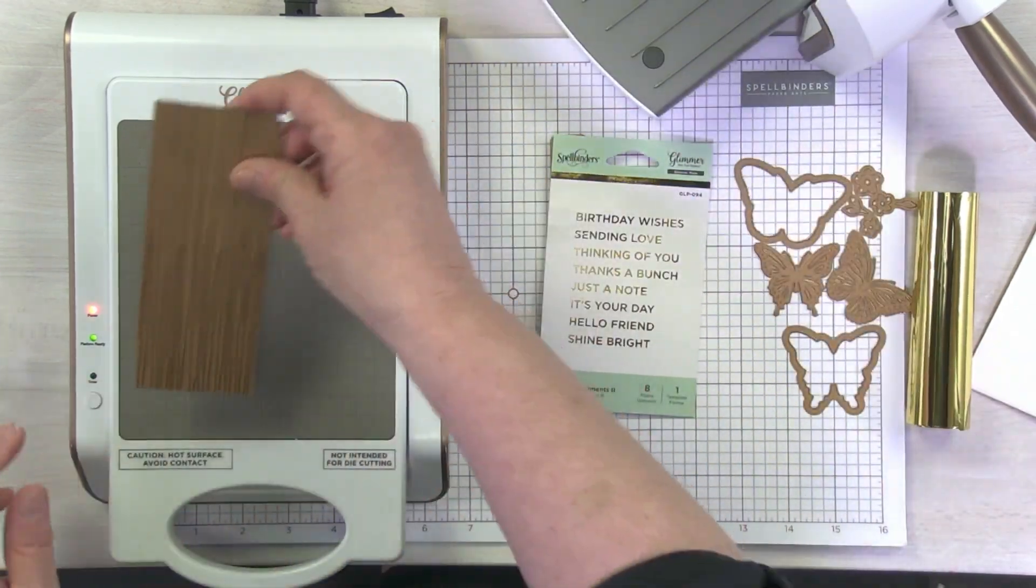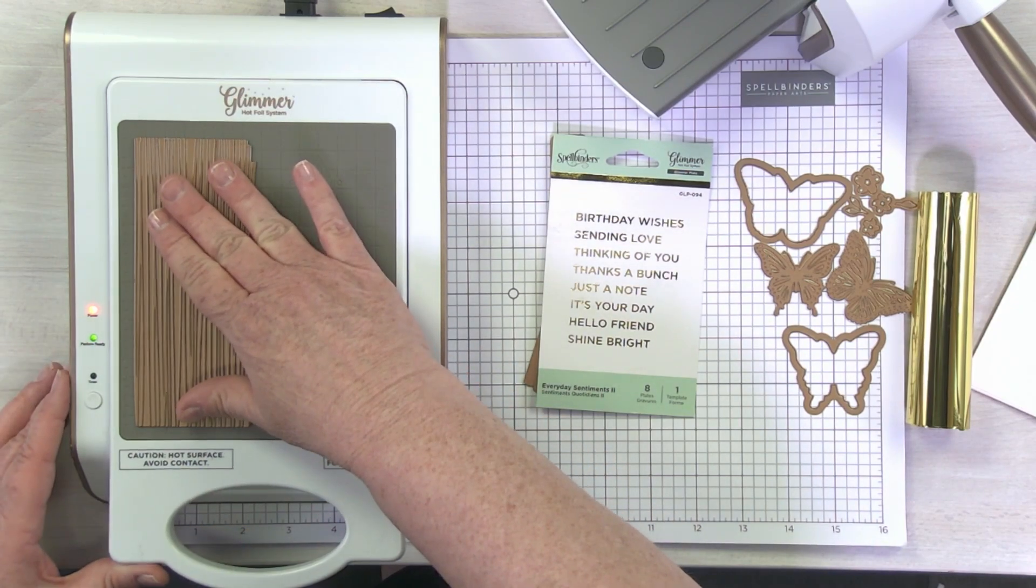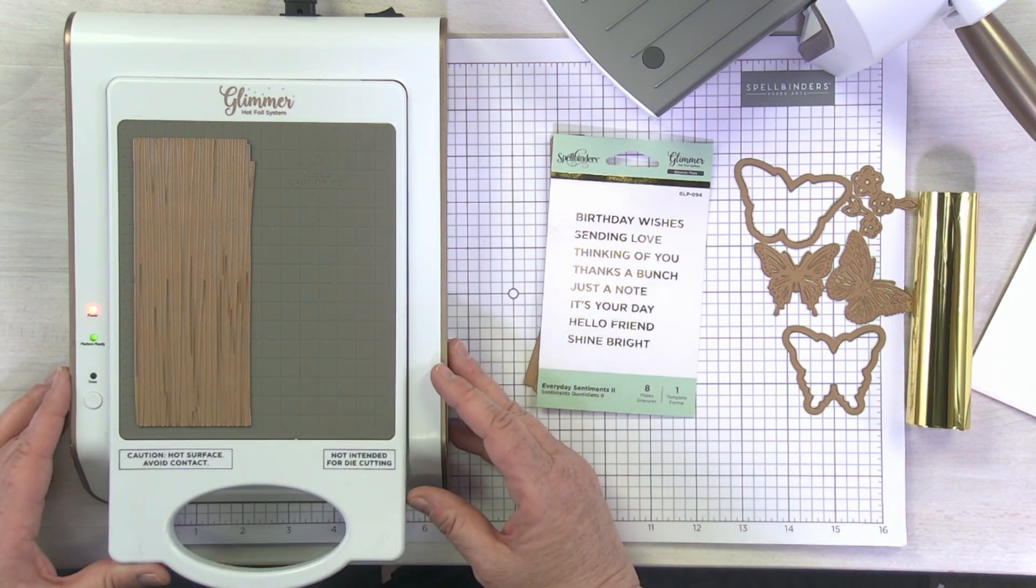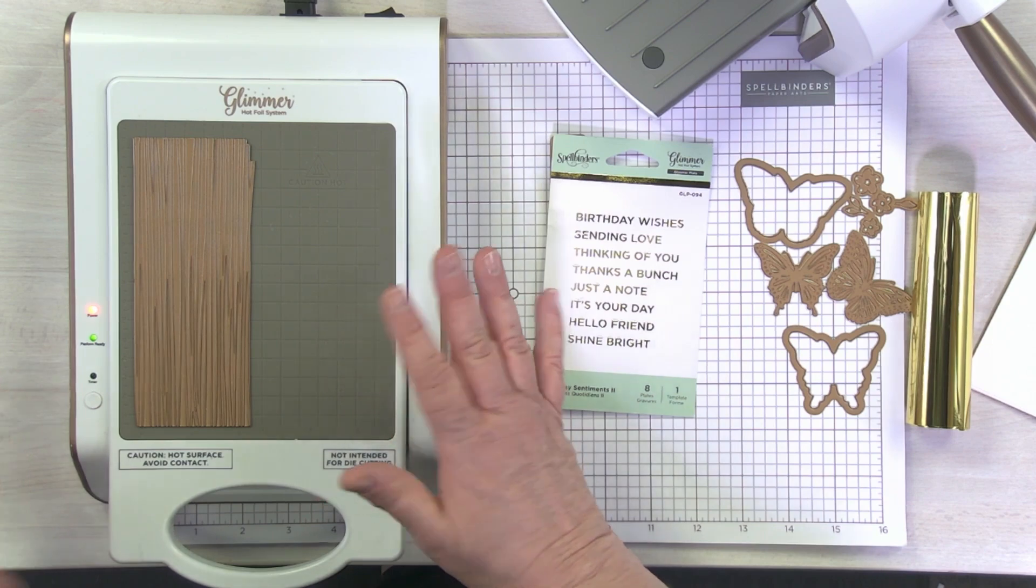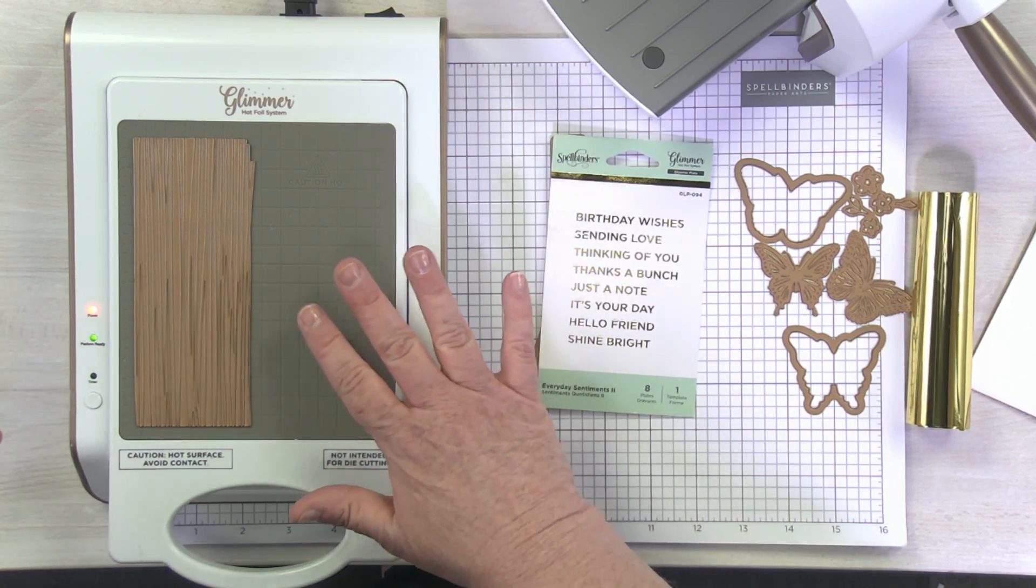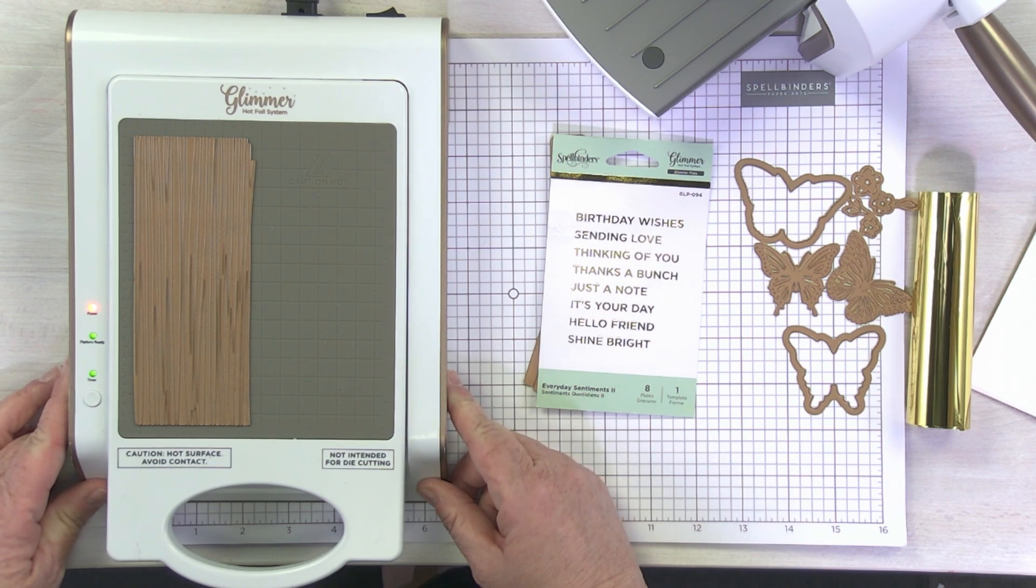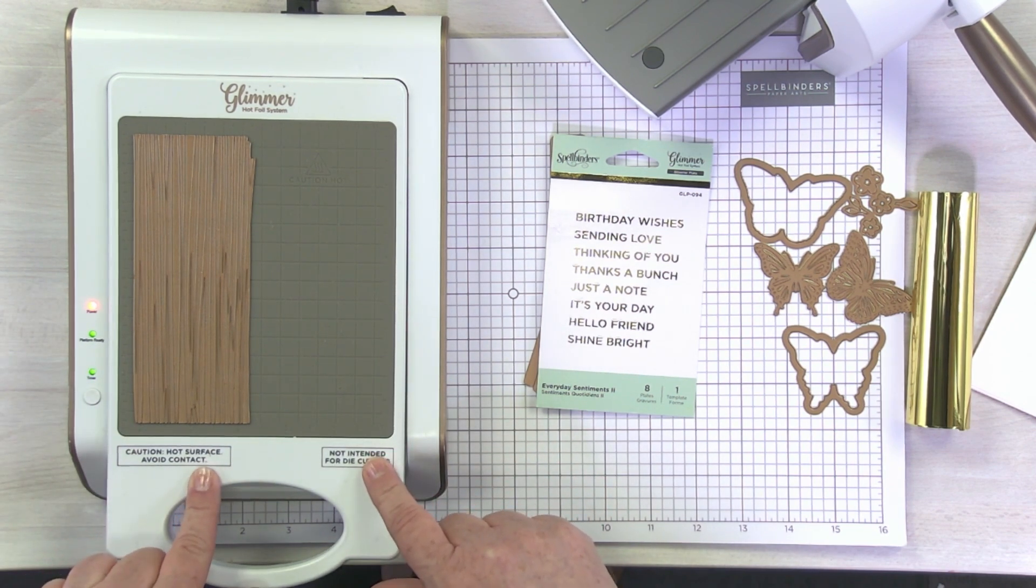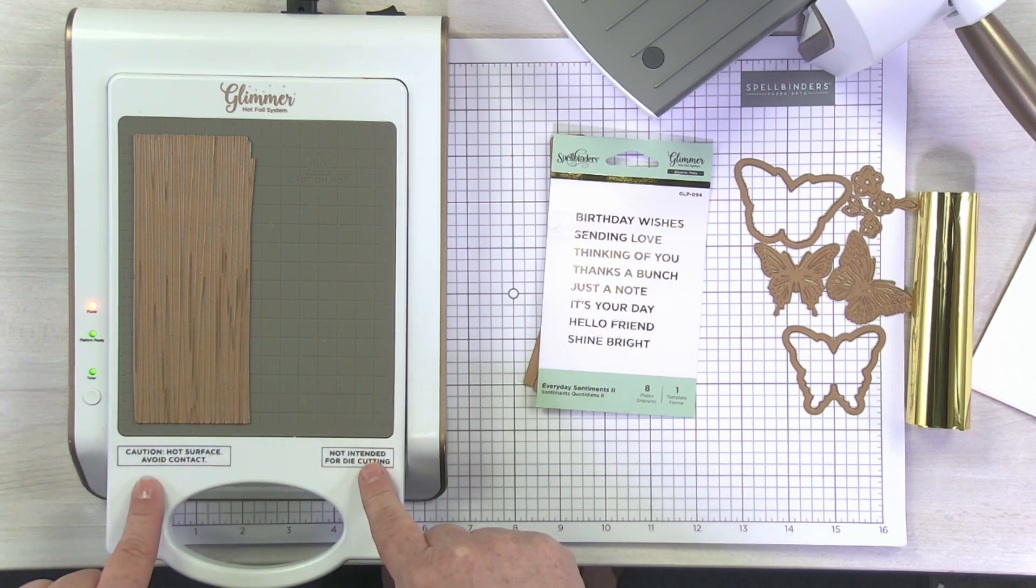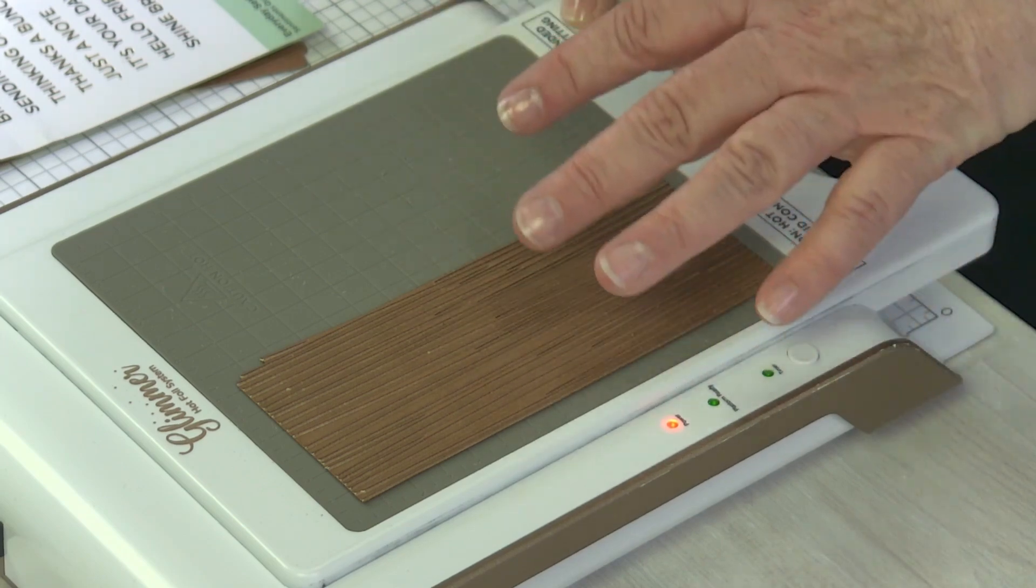I'm going to start with my largest plate, what I consider a very easy glimmer plate just because it foils perfectly every time. I'm going to place that on my platform. Now my platform is warm. I can feel that it's warm. Now since I put my plate on, I'm going to hit the timer button. You're going to see that start to blink.